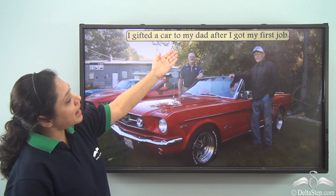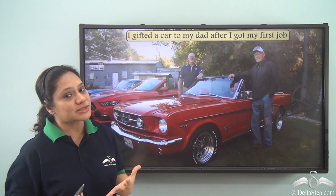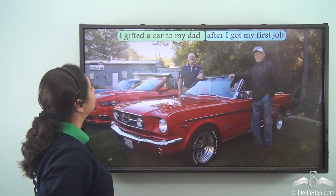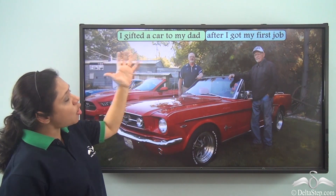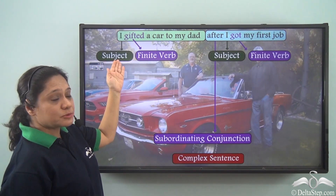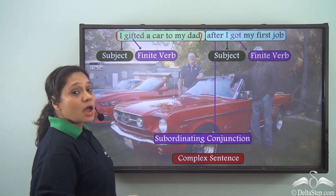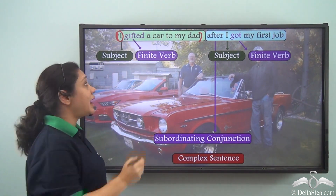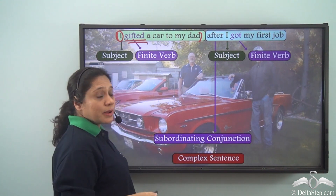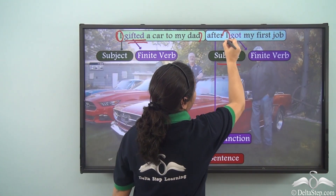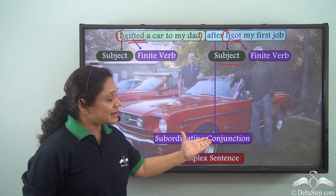I gifted a car to my dad after I got my first job. Now this sentence is made up of two clauses: 'I gifted a car to my dad' and 'after I got my first job.' Both these clauses have a subject as well as a finite verb. The first clause has subject 'I' and finite verb 'gifted.' The second clause has subject 'I' and finite verb 'got.' The second clause starts with a subordinating conjunction.